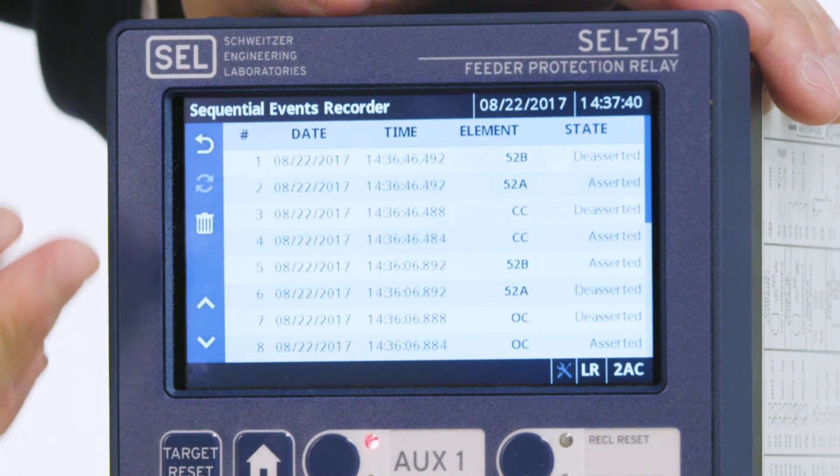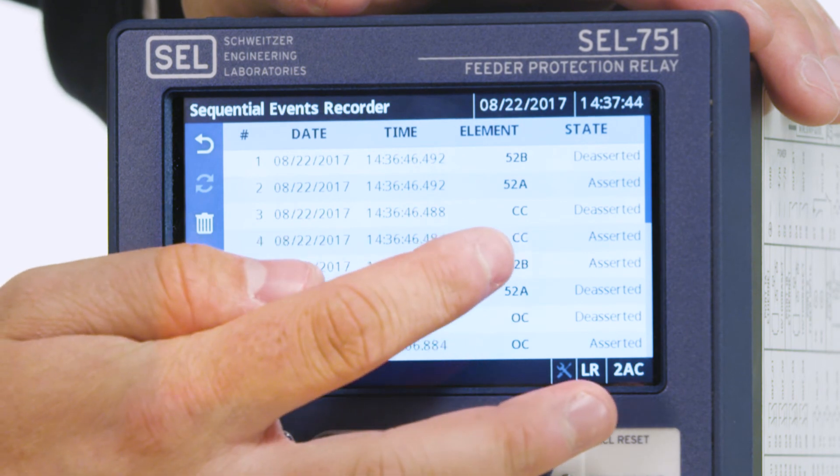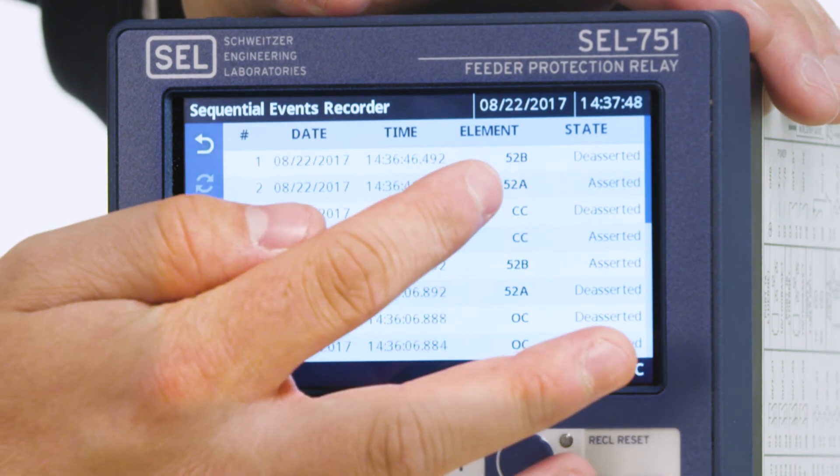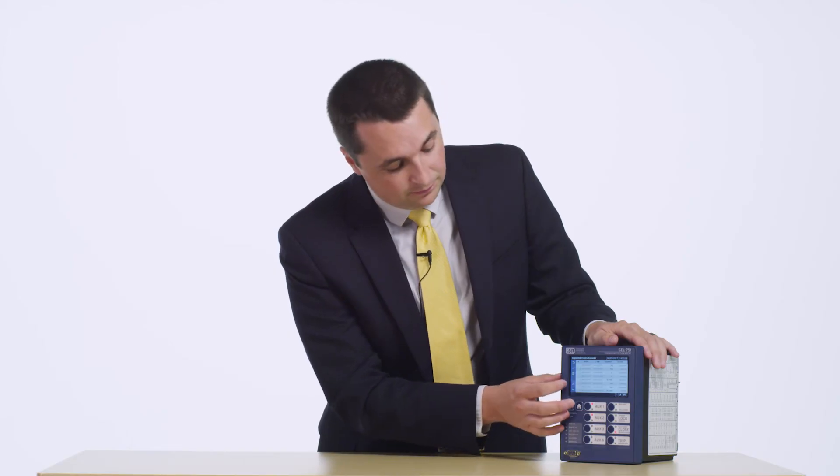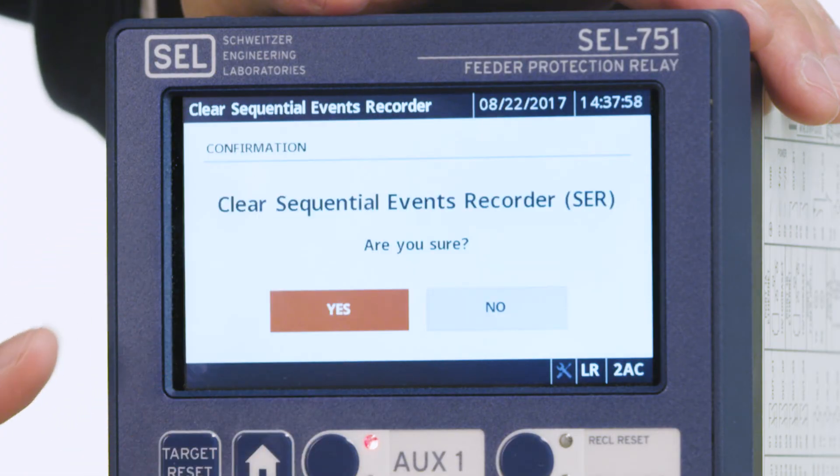At the top of our list here, you can see the close command was issued to close the breaker and the 52A contact was asserted showing that the breaker was closed. To clear the SER, simply press the trashcan icon here and verify that you would like to clear the SER.